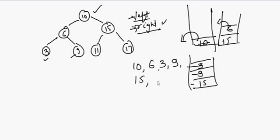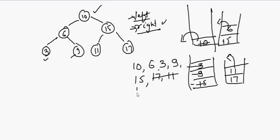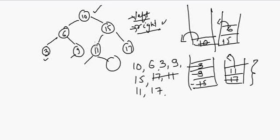Since 15 has children, we push the right child first, which is 17, and then the left child, which is 11. We pop 11 and print it. There is nothing on the left or right of 11. Then we pop 17 and print it. If there were an extra node, say 14 as a right child of 11, after popping 11 we would push 14, then pop and print 14, and finally pop and print 17.